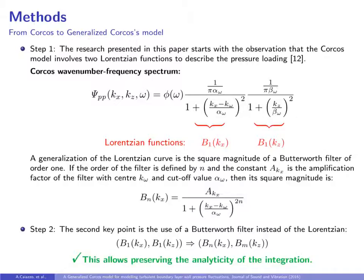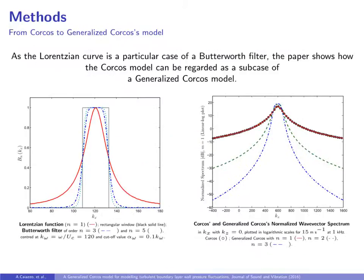Then, the second key point of the proposed model is the use of a Butterworth filter instead of the Lorentzian to describe the pressure loading. This allows preserving the analyticity of the integration. Therefore, as the Lorentzian curve is a particular case of a Butterworth filter, the paper shows how the Corcos model can be regarded as a subcase of a generalized Corcos model.